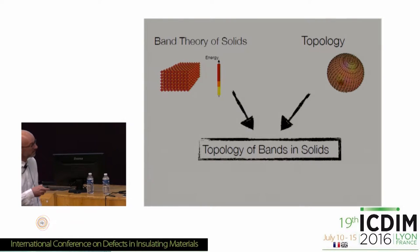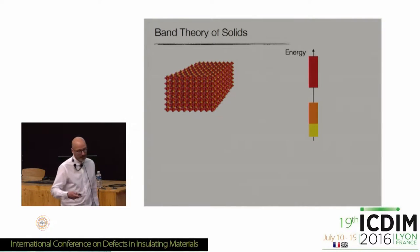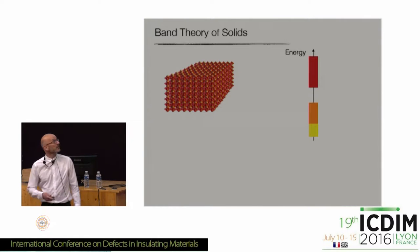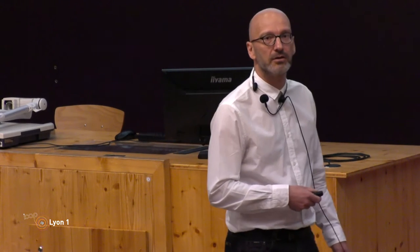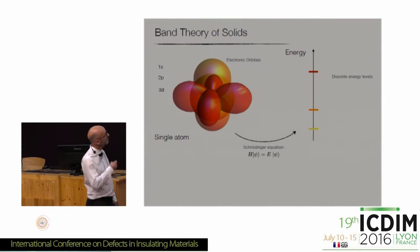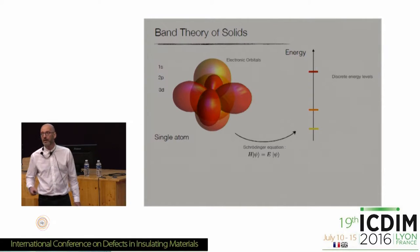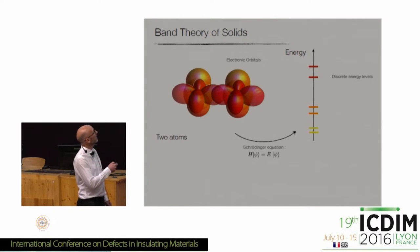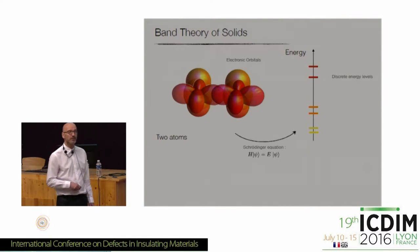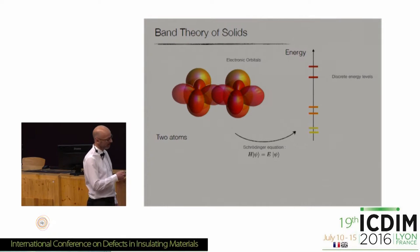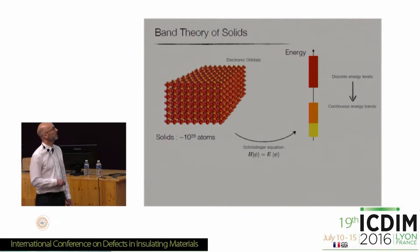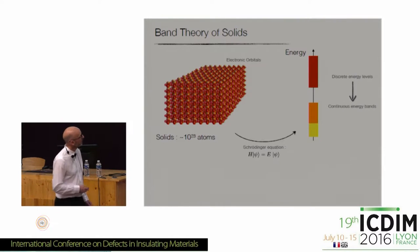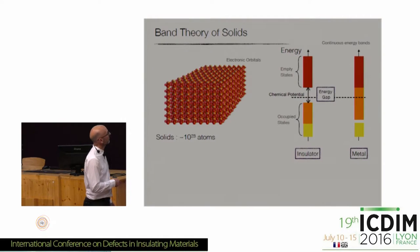Band theory of solids: you're all familiar with it — it describes how the electron behaves in a crystal. From quantum mechanics, electrons around an atom are distributed in orbitals with discrete energies. When you bring together two atoms, electrons can delocalize and you have a slight splitting of energies. When you do that across the whole crystal, you end up with bands instead of atomic orbitals. That's band theory of solids.